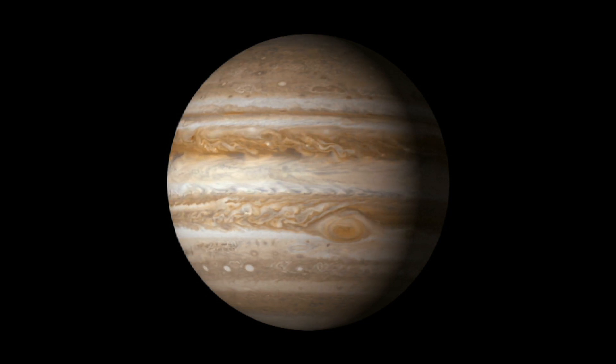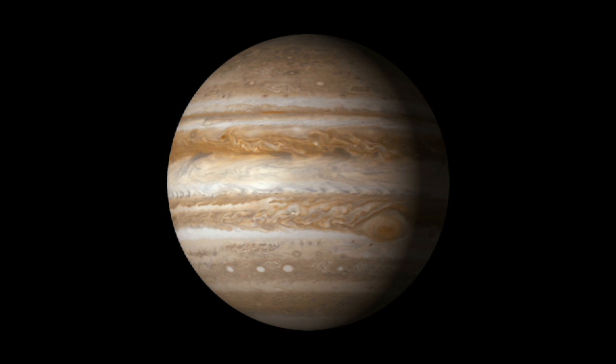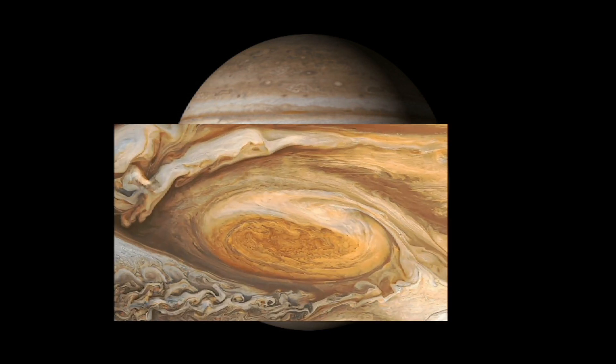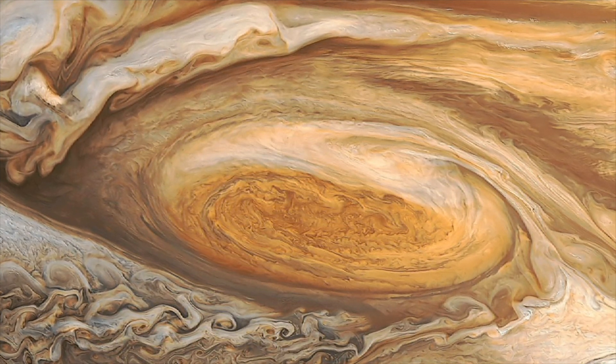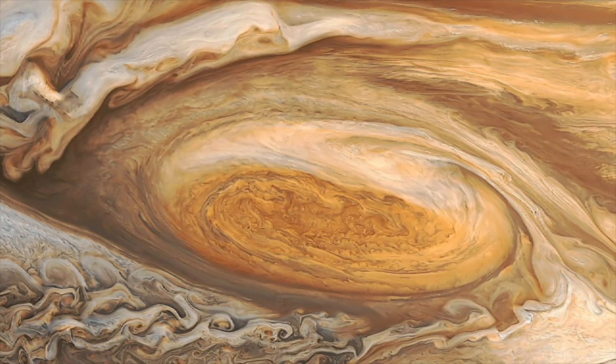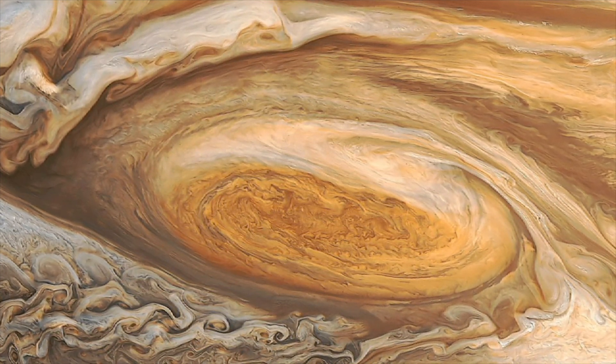Jupiter has many storms raging on its surface. Its famous red spot is a raging gas storm. The red spot is the largest hurricane in the solar system and has been swirling for over 300 years.